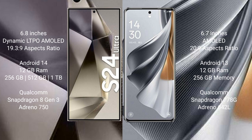The Samsung Galaxy S24 Ultra runs on the Android 14 operating system, while the Oppo Reno 10 Pro runs on the Android 13 operating system.